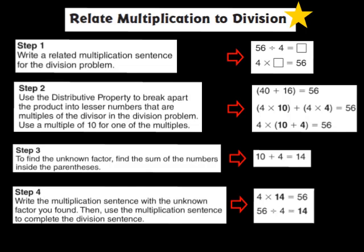Before we begin solving problems in this lesson, I want to talk about some important steps we're going to be using as we relate multiplication to division. Step number 1 says: write a related multiplication sentence for the division problem. The division problem given is 56 divided by 4 equals blank. So I'm now going to write a related multiplication sentence: 4 times blank equals 56.